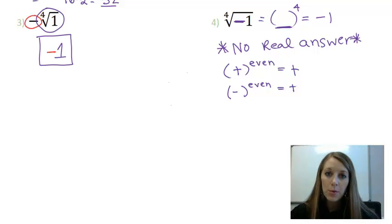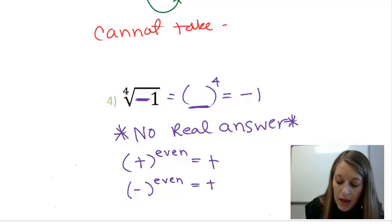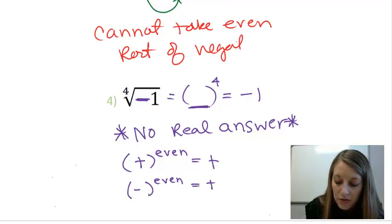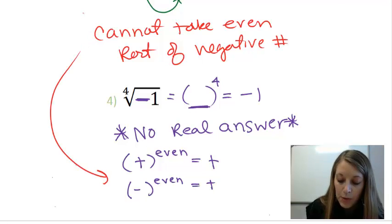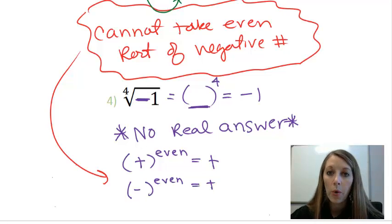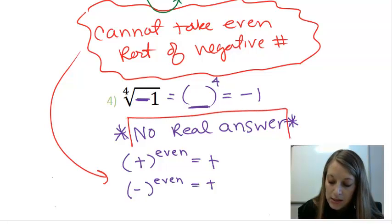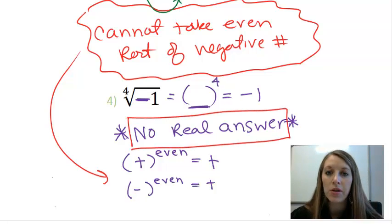So, the trick to problems like this is you cannot take an even root of a negative number. And for that reason that I just explained right there, anything an even amount of times will always end up to be positive. So, my final answer to this is there is absolutely no answer. It's kind of a trick question.